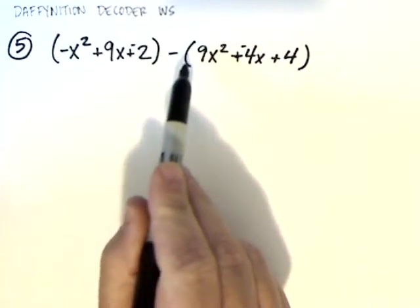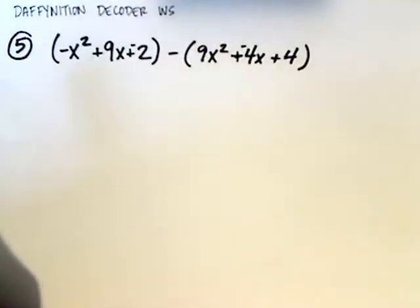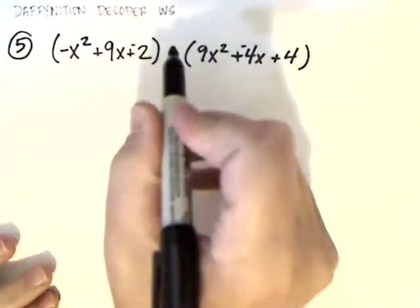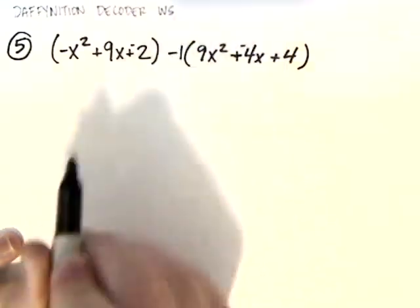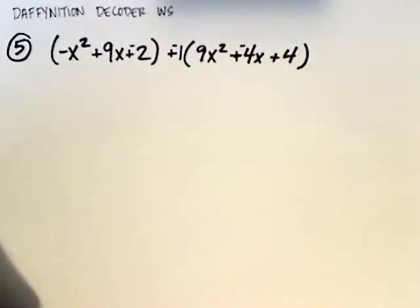But when I have a minus sign between polynomials, things happen a little bit differently. You see, a minus sign right here, it's almost good to think of it as a negative 1 being distributed into that polynomial. So, I like to put plus negative 1 right there.